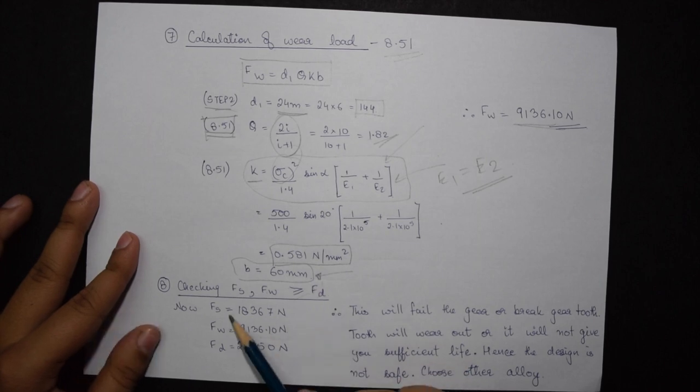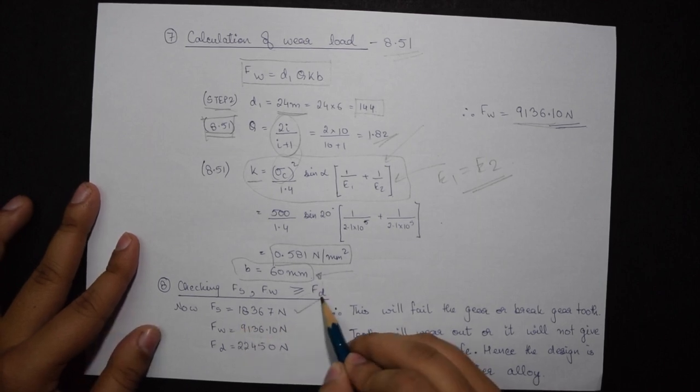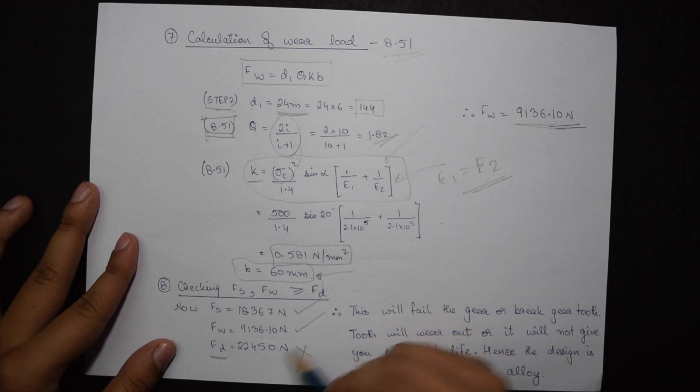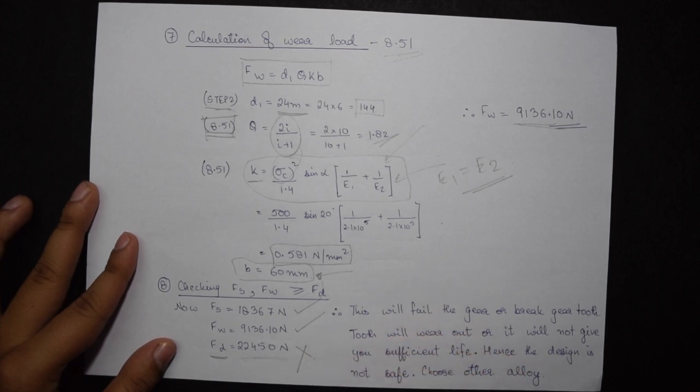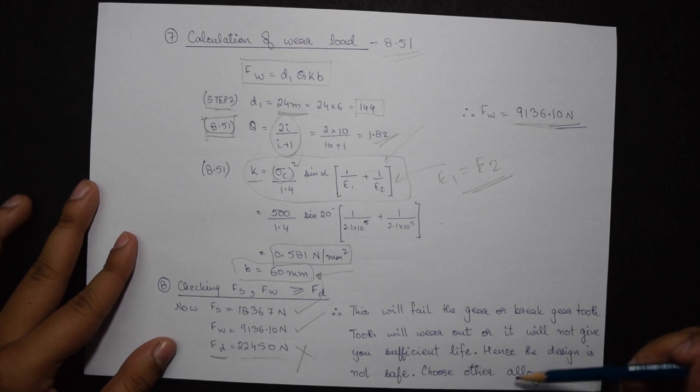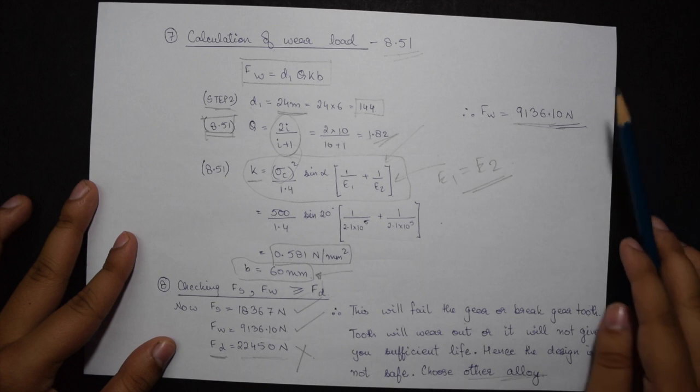So FS is 18,367 newtons, FW is 9136.1 newtons, but FD is the greatest at 22,450 newtons. Therefore this will fail the gear or break the gear tooth. The tooth will wear out or will not give sufficient life, hence the design is not safe. So we should choose another material with better hardness so that the design safety is satisfied.